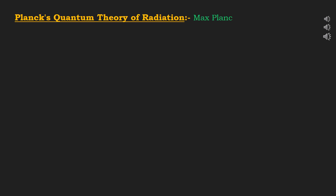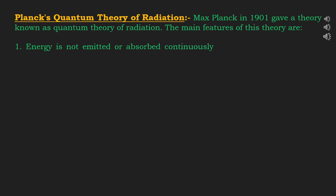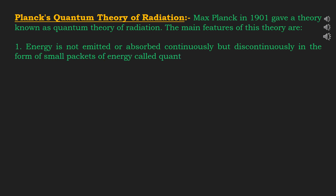Our next topic is Planck's quantum theory of radiation. Max Planck in 1901 gave a theory known as quantum theory of radiation. The main features of this theory are: first, energy is not emitted or absorbed continuously but discontinuously in the form of small packets of energy called quanta. In case of light, it is called a photon.